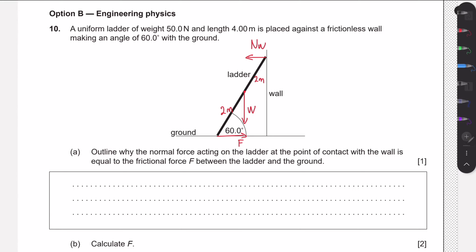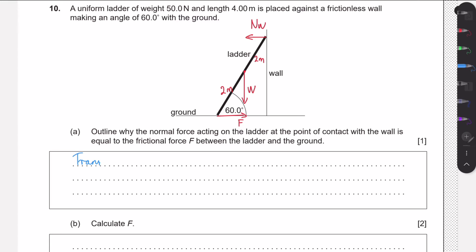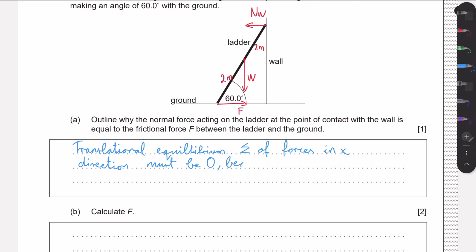This first part wants us to outline why the frictional force and the normal force must be equal. The reason is that we have translational equilibrium — the sum of forces in the x-direction must be zero. The ladder is not moving horizontally; it's stationary against the wall. If these two forces were not equal, there would be a net horizontal force and the ladder would move left or right, but that's not happening.